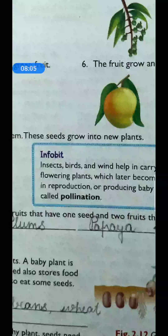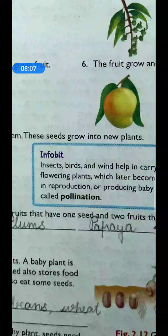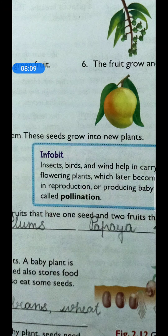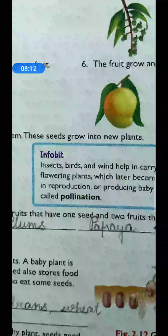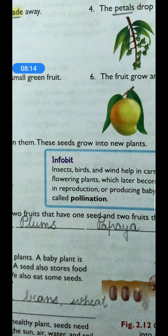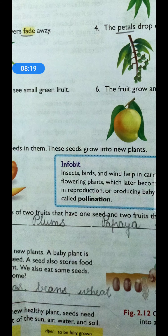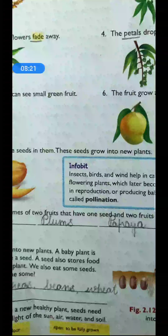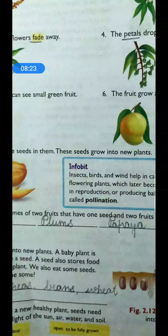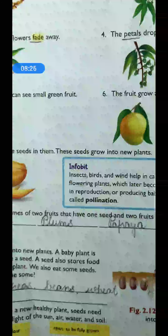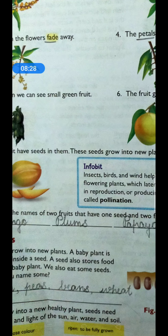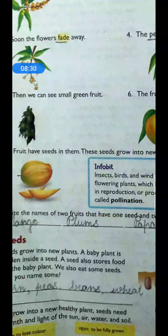We will cut the fruits and we can see the seeds in them. These seeds grow into new plants again. If you can see the seeds, in the same way you can get new plants from those seeds. So if you have a garden in your house, then you can do this — whatever fruits you are eating, you can use those seeds to get a new plant.